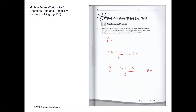Michelle got an average of 80 on two tests. What score must she get on the third test so that the average score for the three tests is the same as the average score for the first two? In order for that to happen, the third test has to be 80 as well. For example, if test one is 90 and test two is 70, the average is 80, so she needs 80 on the third test.